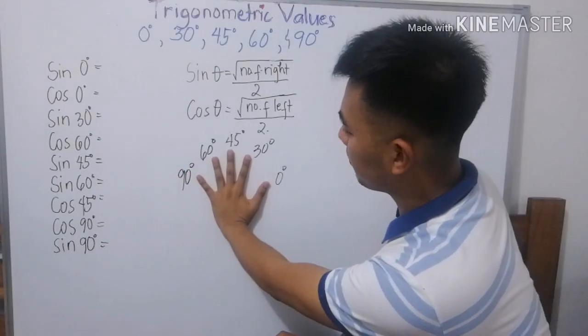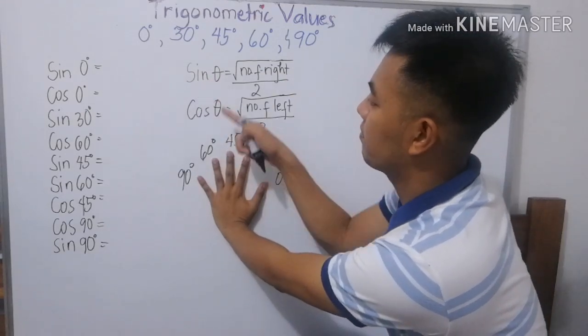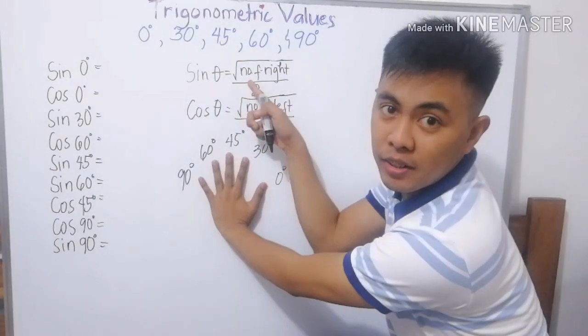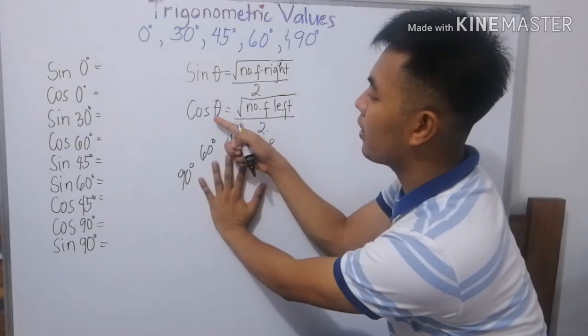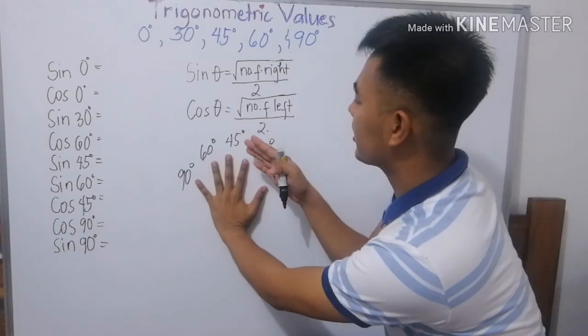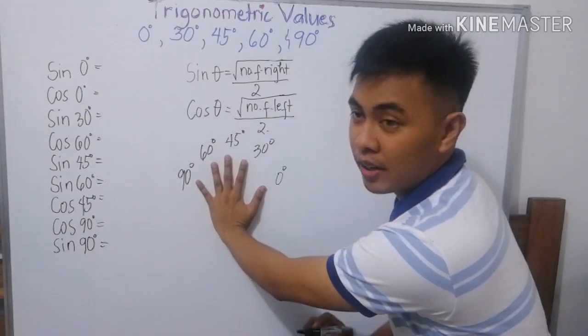So, gamit na kamay na to, define sine and cosine. Ito yun. So, sine theta is equal to the square root of the number of fingers in the right, divided by 2. Kapag cosine naman, ay square root of the number of fingers na nasa left, divided by 2.